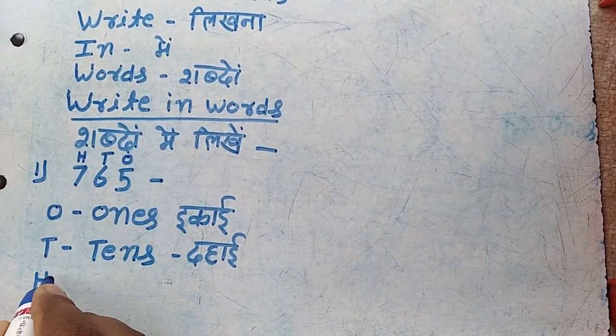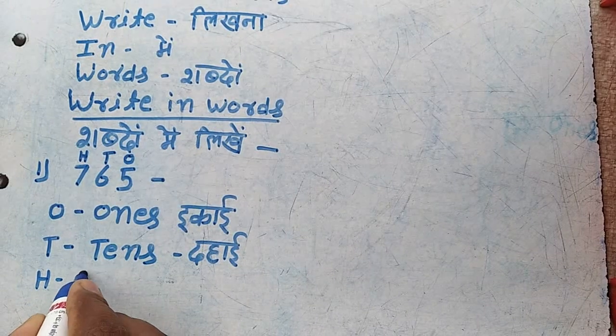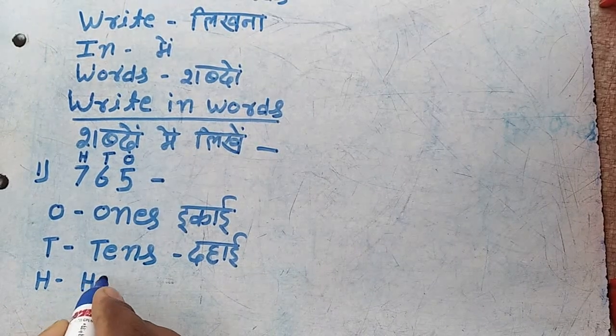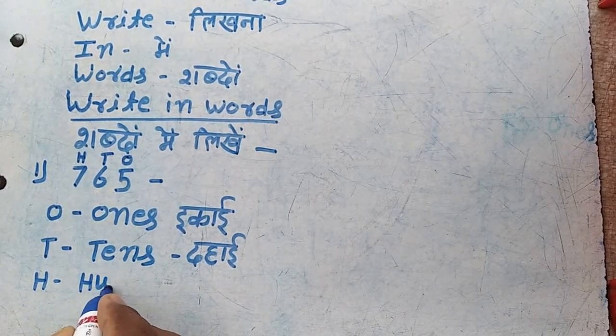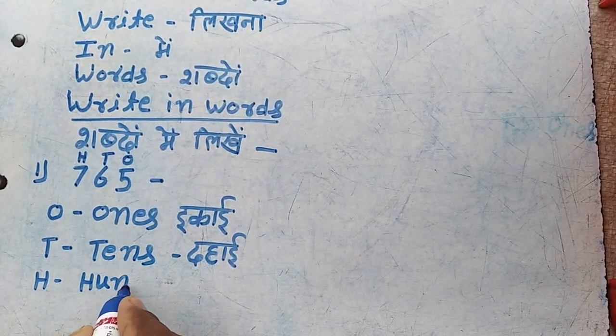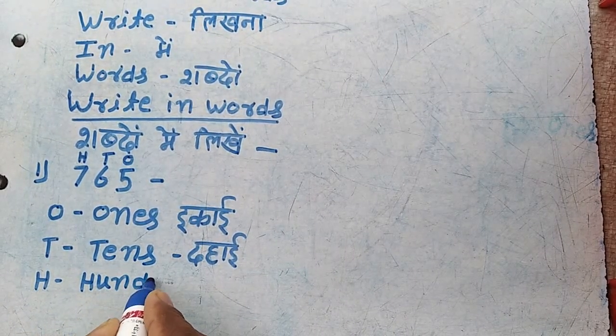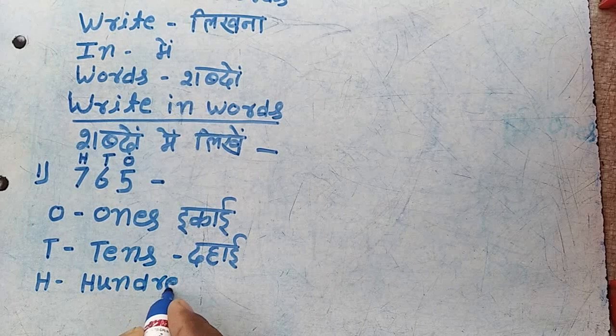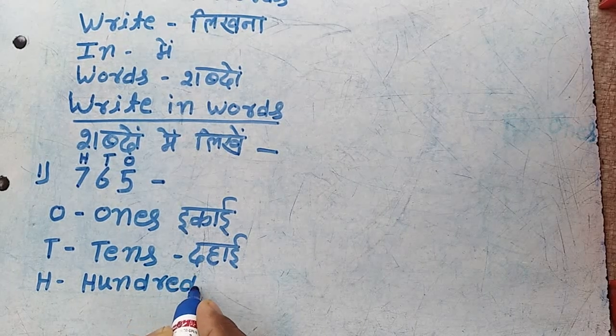H means hundreds — H-U-N-D-R-E-D-S. Hundreds means sau (hundreds place).